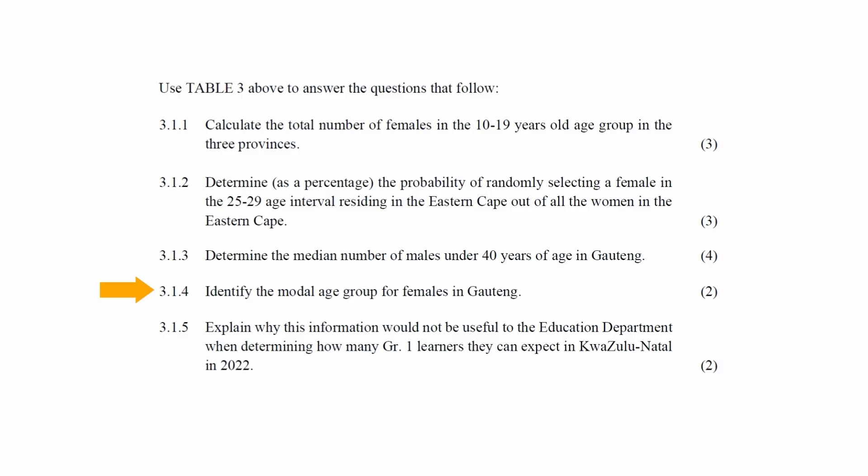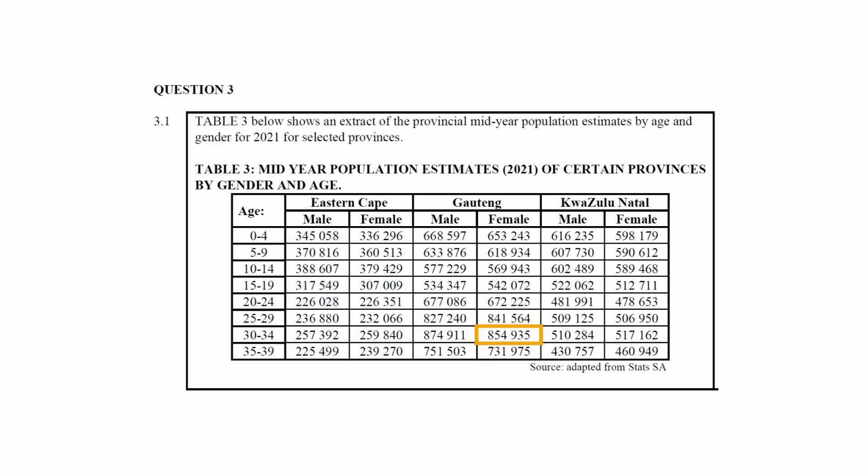In question 3.1.4, you have to identify the modal age group for females in Gauteng. The modal age group, or mode, is the age group that appeared the most times in the census. Looking at the values for females in Gauteng, the age group that came up most during counting was the 30 to 34 interval, with a value of 854,935.